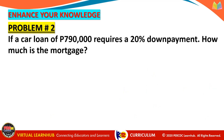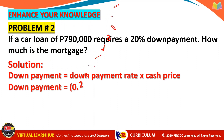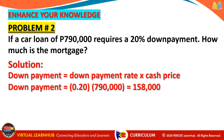Problem number two: If a car loan of 790,000 pesos requires a 20% down payment, how much is the mortgage? The solution: down payment equals down payment rate times cash price. From the problem, the down payment rate is 20% and the cash price is P790,000. Therefore, the down payment is 0.20 times P790,000, which equals P158,000 pesos. Take note that the question asks not for the down payment amount but for the mortgage.